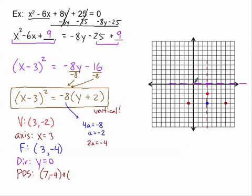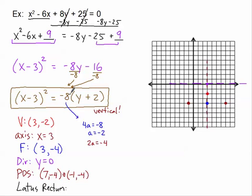The two points of symmetry are (negative 1, negative 4) and (7, negative 4). Finally, let's find our latus rectum. The latus rectum is a distance, and we know it's the number that comes right from our standard form, but it's always the positive value of that number — so the latus rectum is 8 units long.